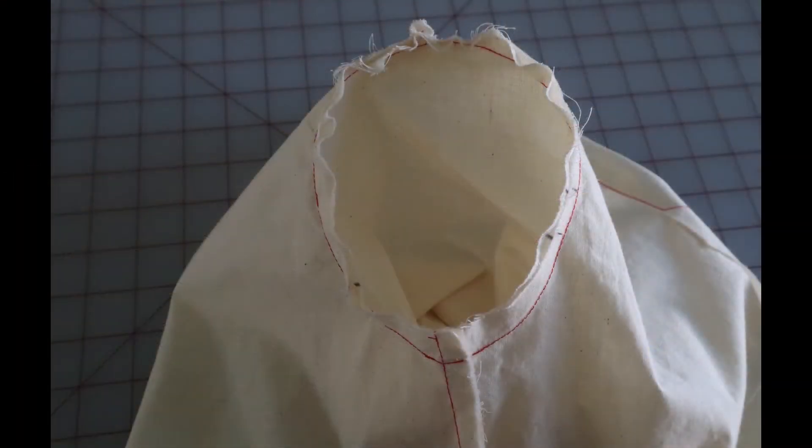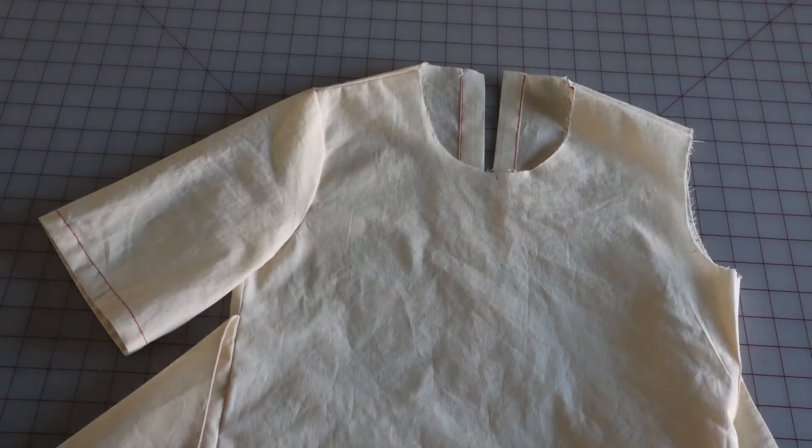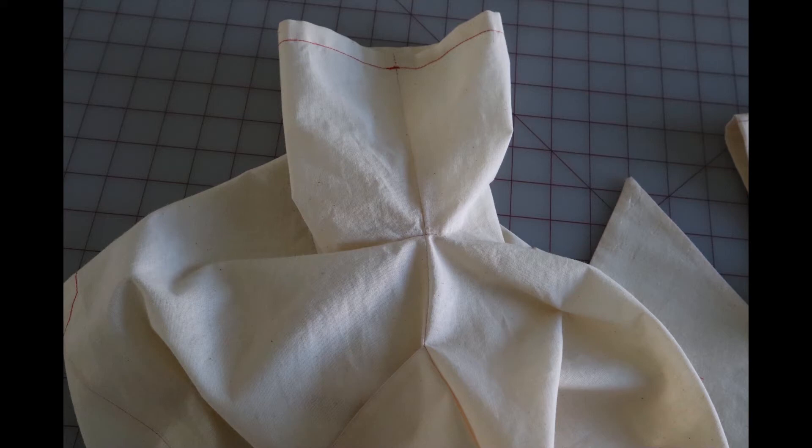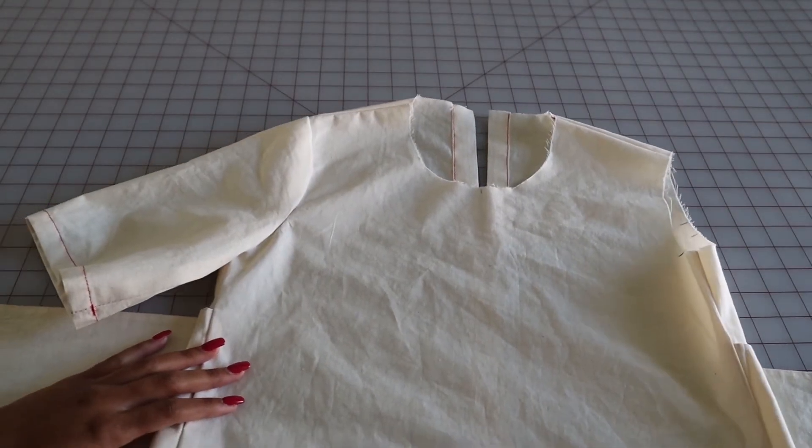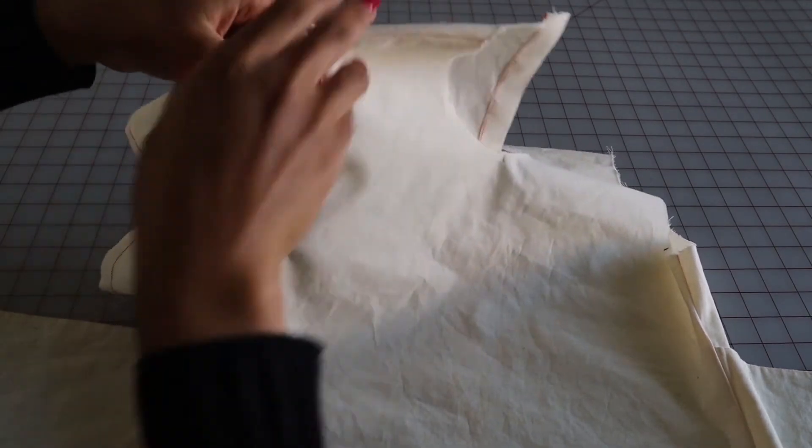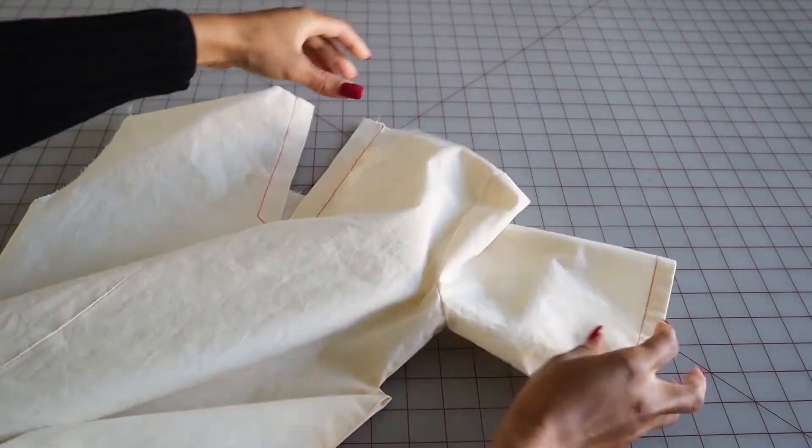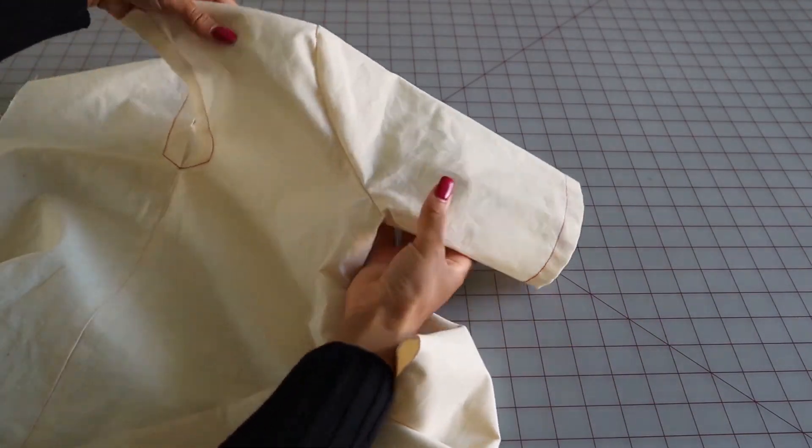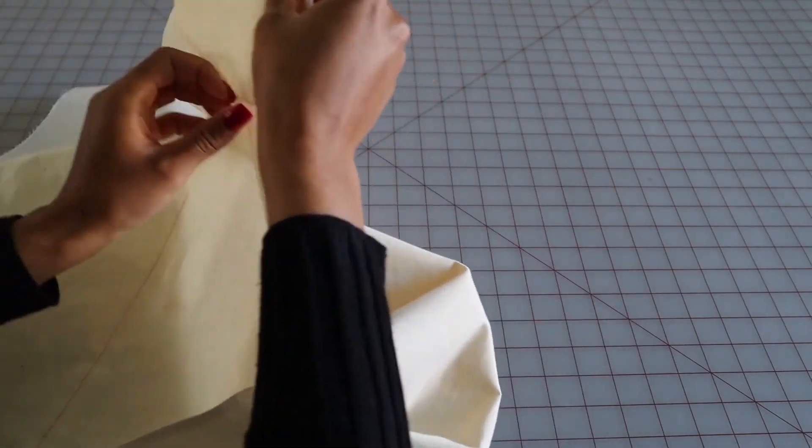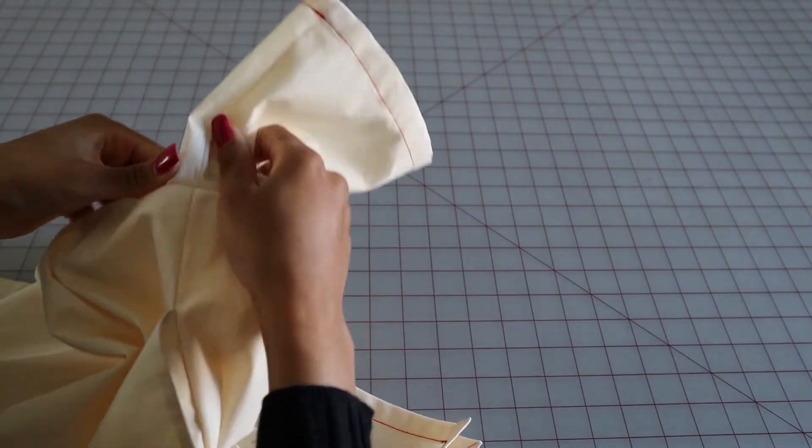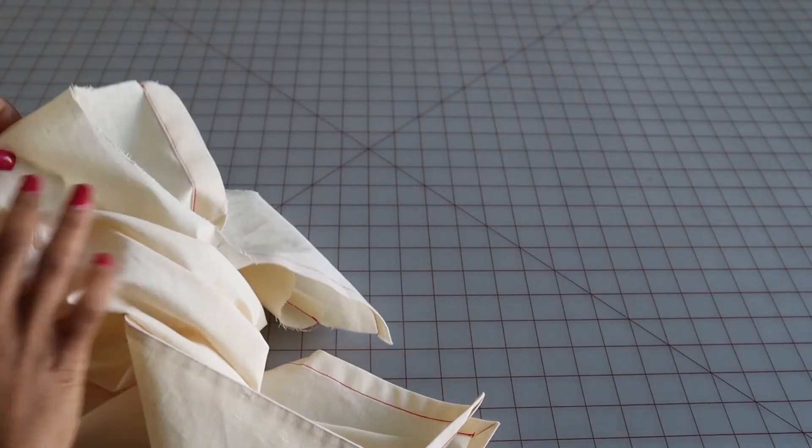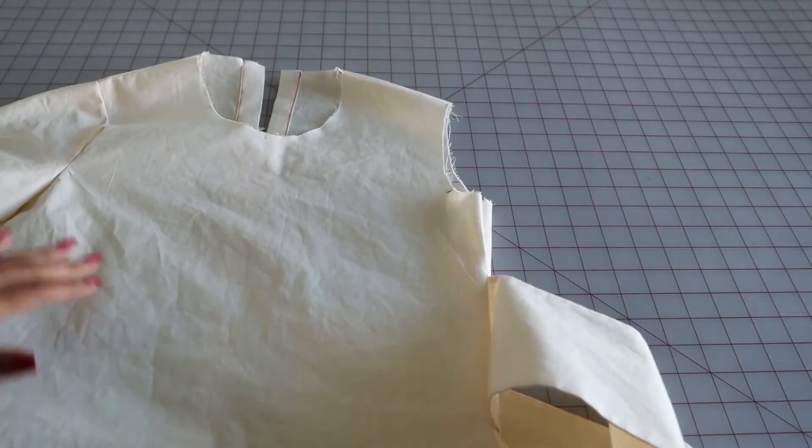Once you're finished sewing, from the inside it will look like this. From the outside it will look like this, and be sure that your sleeve seam and your side seam are matching. Okay, so here we have our set-in sleeve sewn in. This is what it will look like on the front - it looks nice and smooth, and then also on the back, nice and smooth, no accidental pleats. Then for the seams at the underarm, they match perfectly.